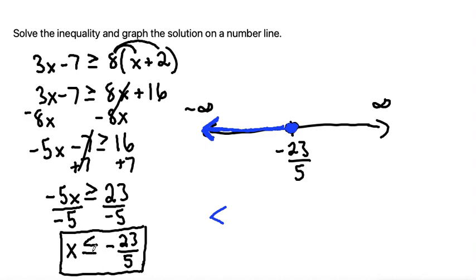So again, if there's an equal to, then you want a closed dot. If it was not equal to, if it was just less than, then it would be an open circle. That's really the main difference there.